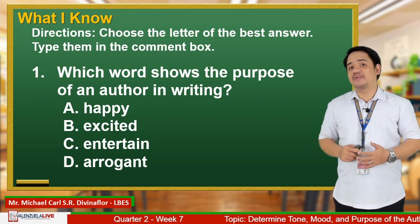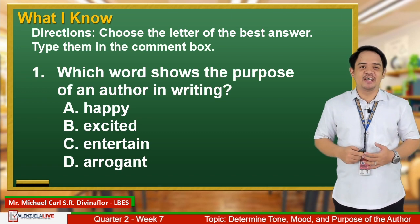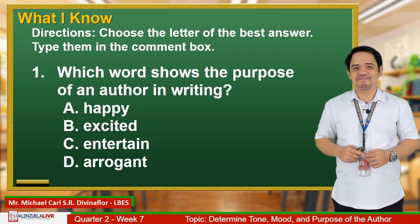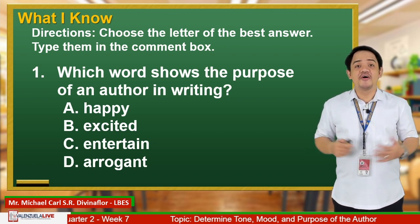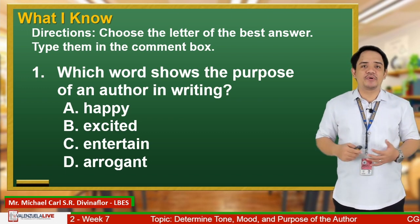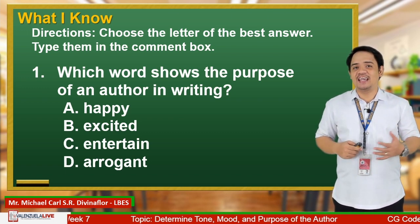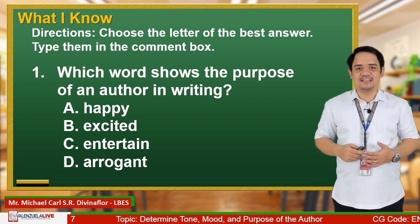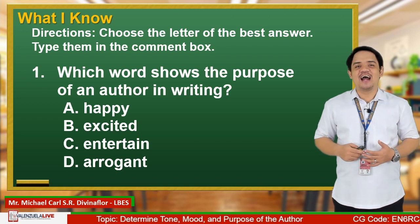For your directions, simply choose the letter of the best answer and comment the letters below. Are you ready? Let us now start. For number 1, which word shows the purpose of an author in writing? Is it A. Happy? B. Excited? C. Entertain? D. Arrogant?